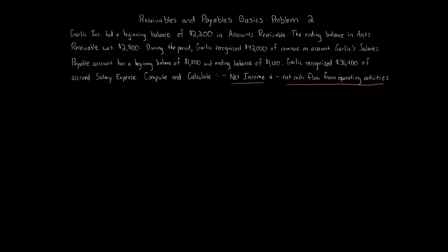The net cash from operating activities is going to be a little bit more challenging. Net income is straightforward — that's the income statement. We take revenue minus expenses, and we can just use the information given to us in this problem. We're going through and seeing if we can identify any revenues and any expenses.